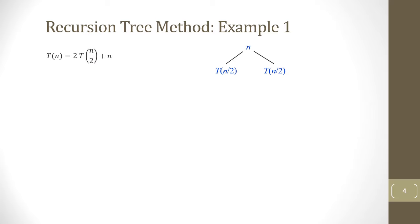For the merge sort recurrence, the n — which is the non-recursive part — will be the root node of the tree. The function T is called two times on input size n/2, so we will have two children of T(n/2). So 2T(n/2) + n will be represented as a tree with root n and two children T(n/2).